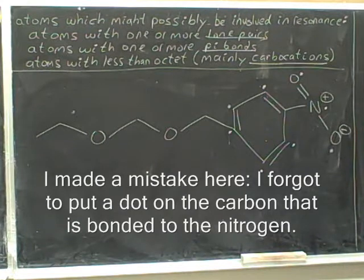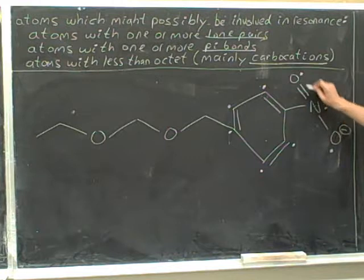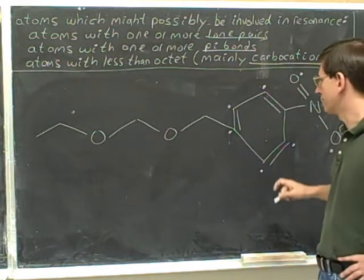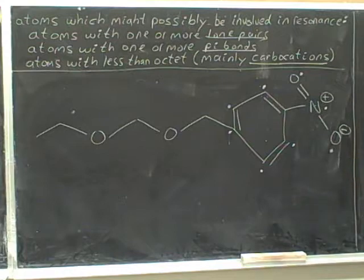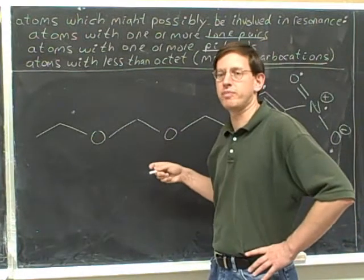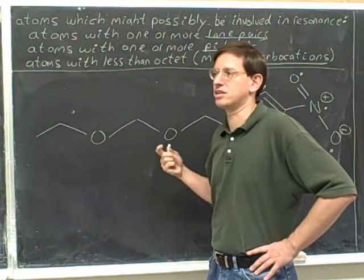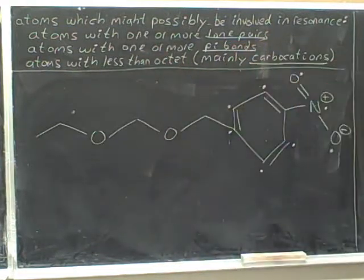So the atoms that could participate in resonance are every atom in this ring. That gives us six, seven, eight, nine — nine atoms that can participate in resonance. These two can't, because even though they have lone pairs, they're not directly connected to anybody else who satisfies these characteristics.